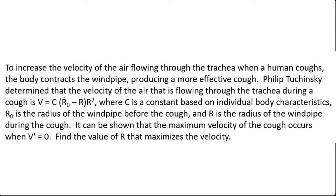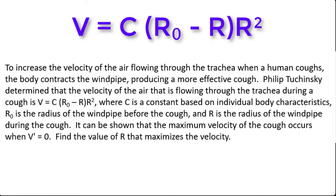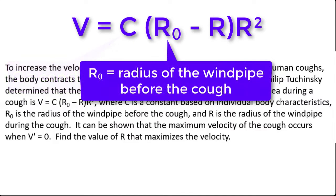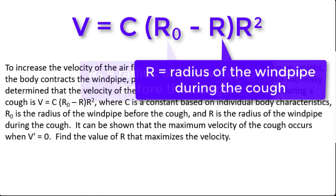The application we're going to pursue in this video is what you see on screen now. To increase the velocity of air flowing through the trachea when a human coughs, the body contracts the windpipe, producing a more effective cough. Philip Tuchinsky determined that the velocity of air flowing through the trachea during a cough is V equals C times the quantity R sub zero minus R times R squared, where C is a constant based on individual body characteristics, R sub zero is the radius of the windpipe before the cough, and R is the radius of the windpipe during the cough.